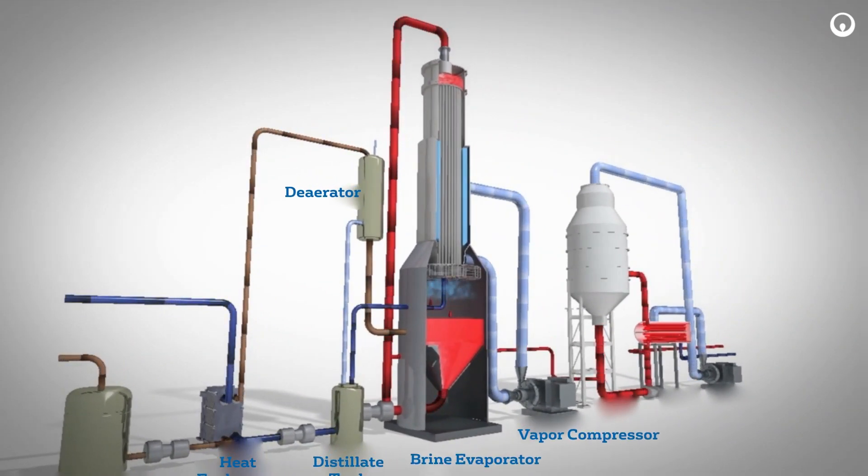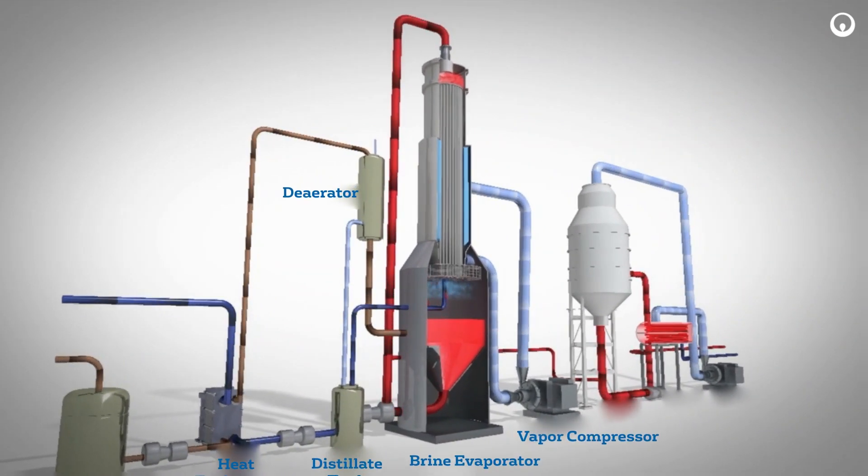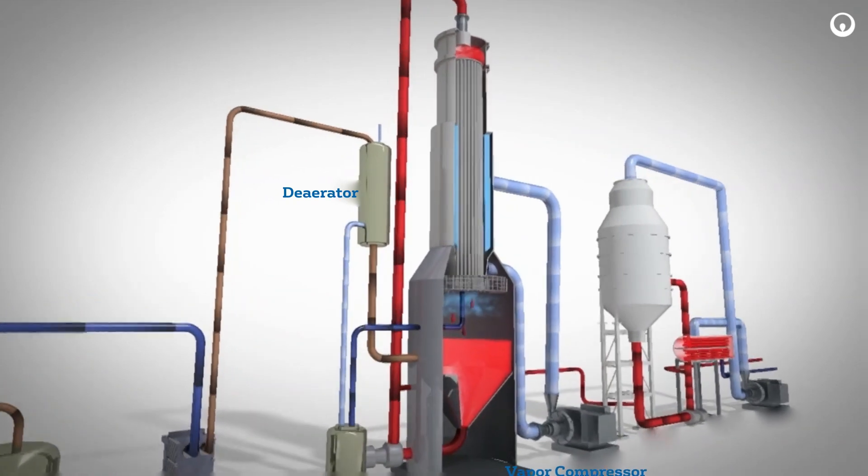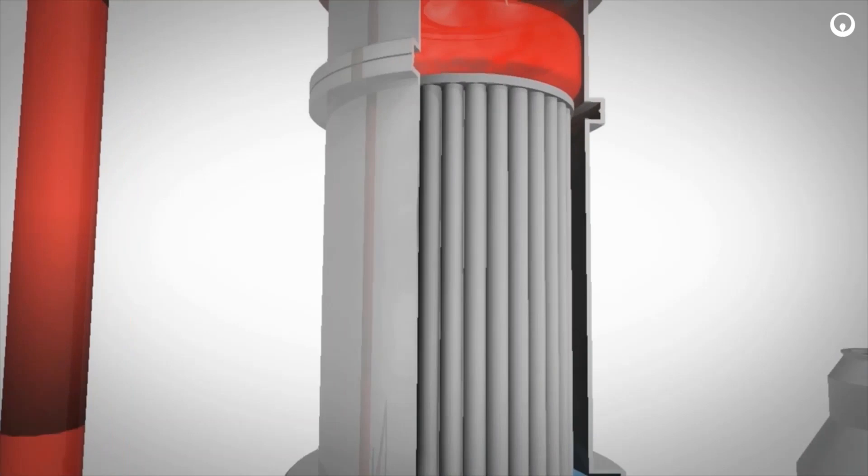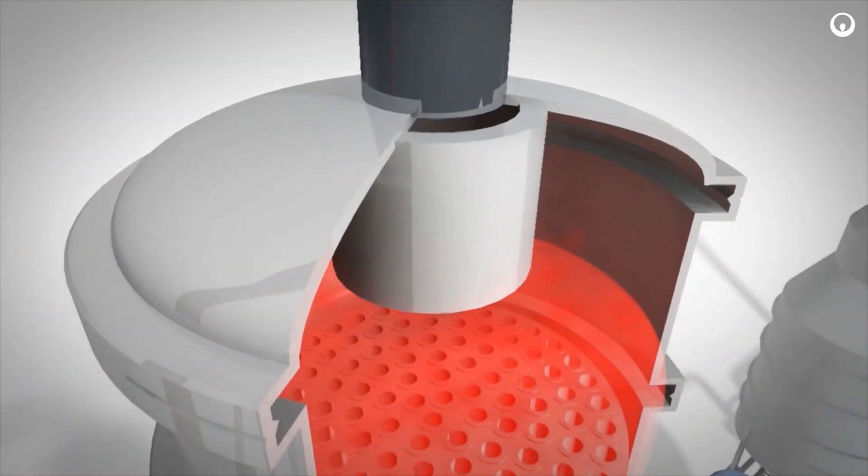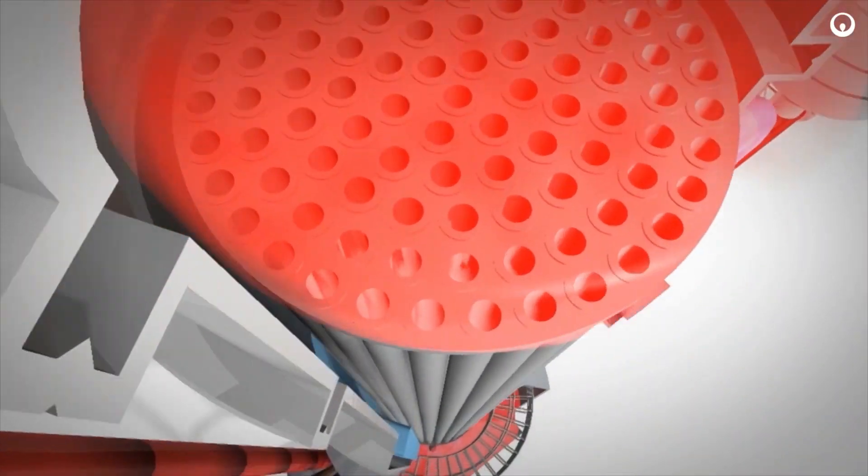Brine is transferred from the sump to the flood box located at the top of the evaporator heat transfer tubes using the recirculating pump. Brine in the flood box is distributed in each of the heat transfer tubes.